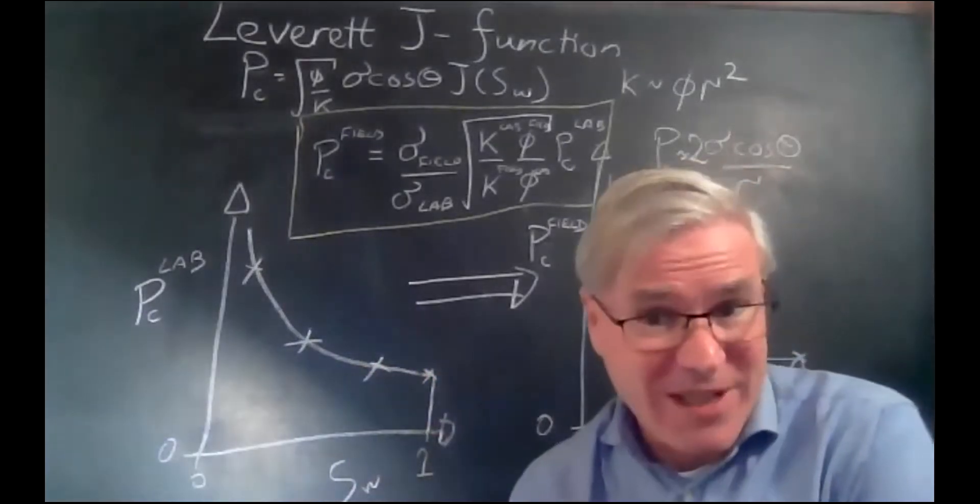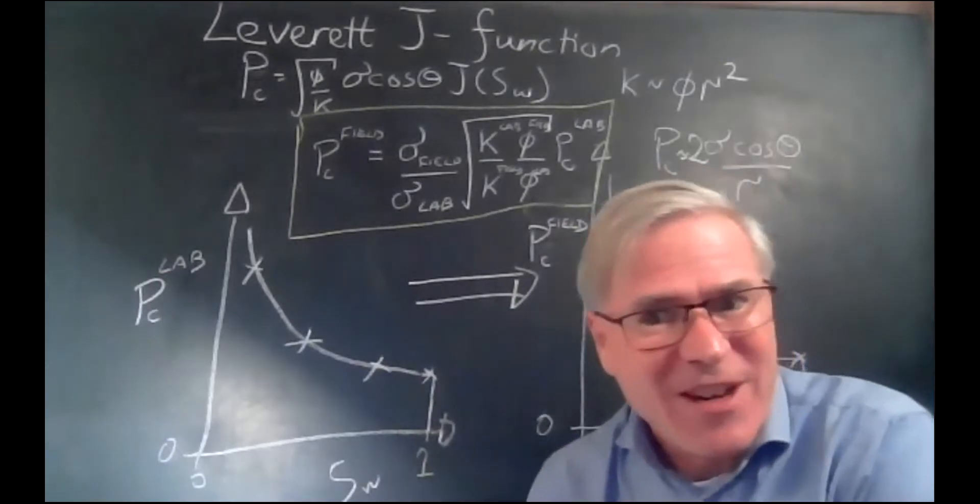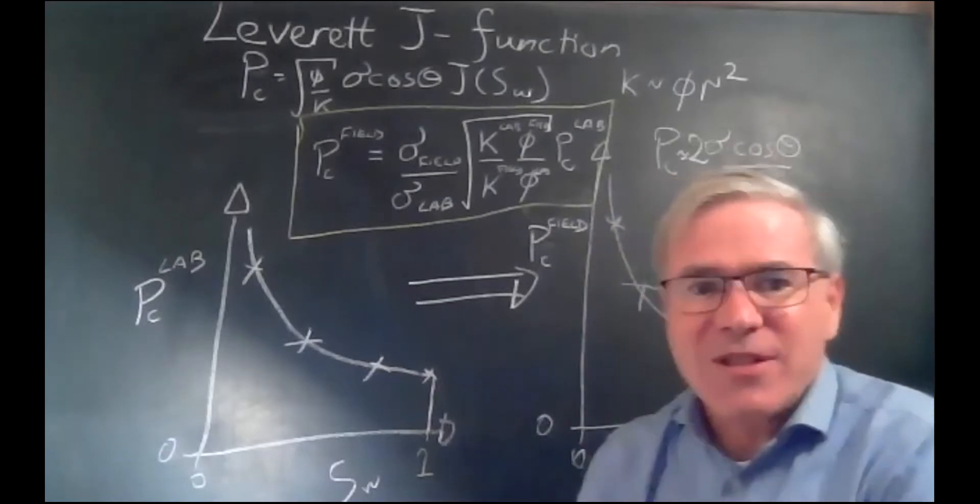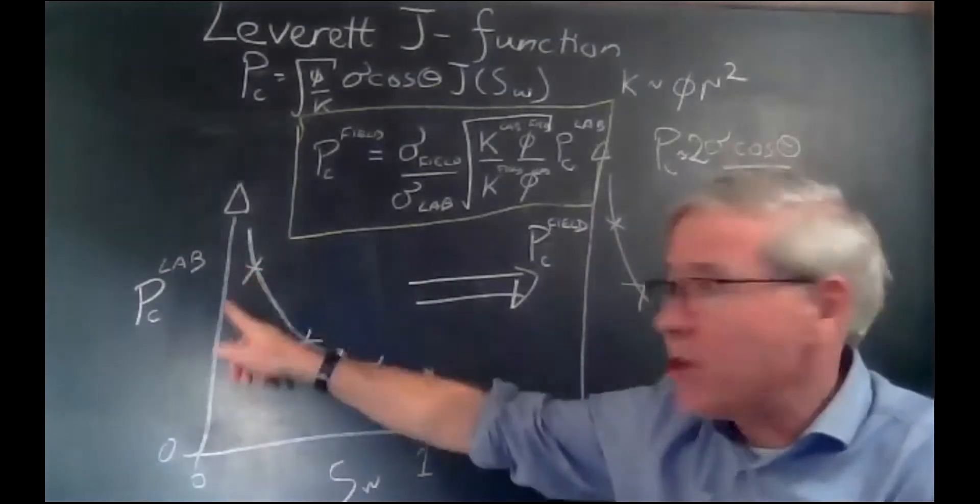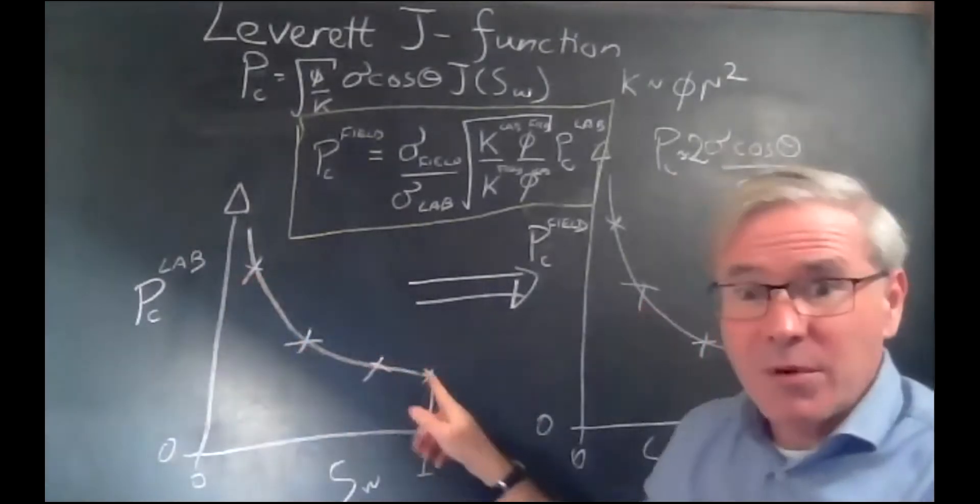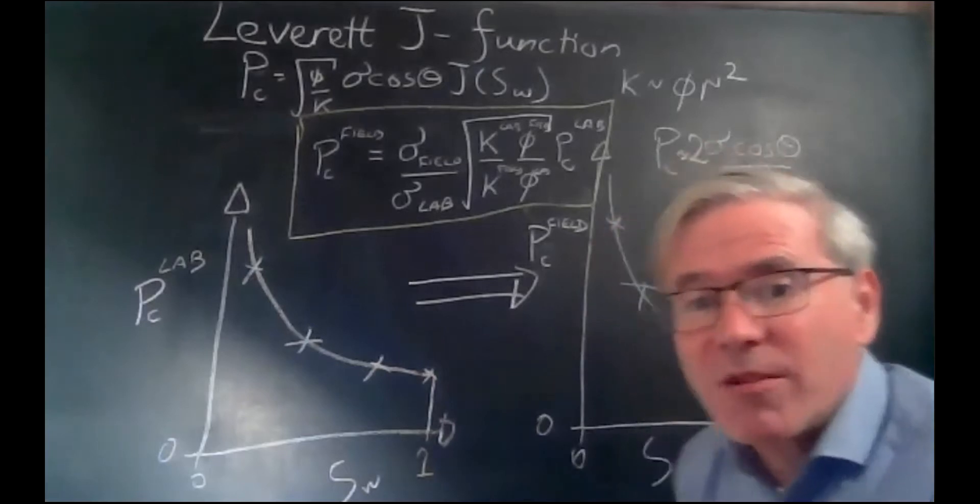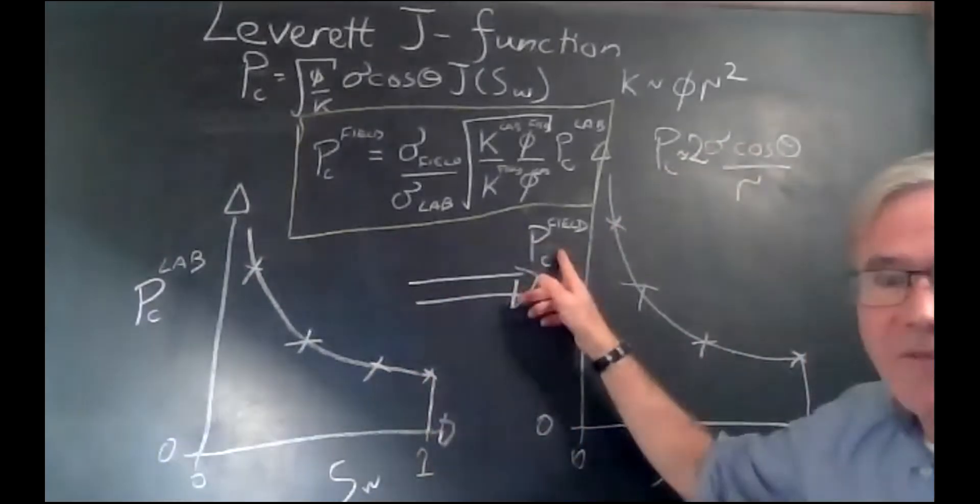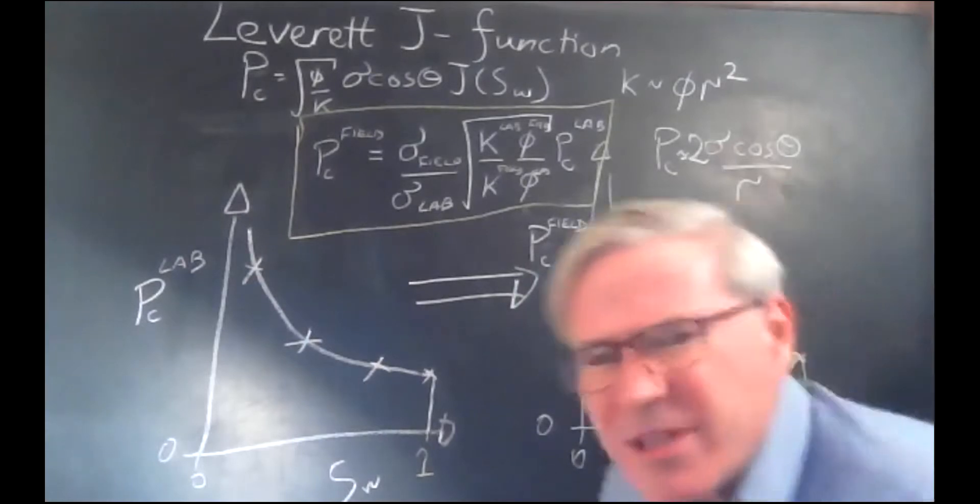Mercury is the non-wetting phase displacing a vacuum, which actually is the wetting phase in this example. So this, for instance, is a measurement using mercury, and these are the experimental points. But for field applications, we want to know the corresponding capillary pressure in the field as a function of saturation.